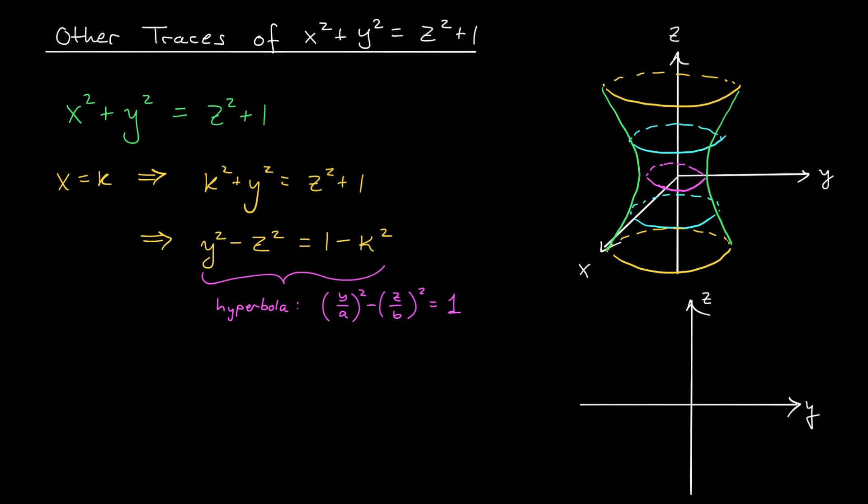If I divide both sides of this expression by 1 - k², I'm going to get y²/(1-k²) - z²/(1-k²) = 1. So let's take a look at what we have here. When 1 - k² is positive,